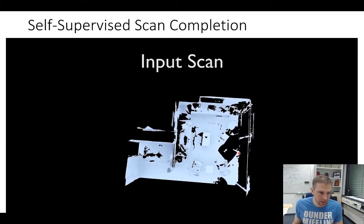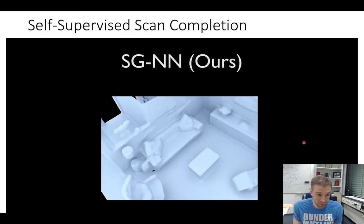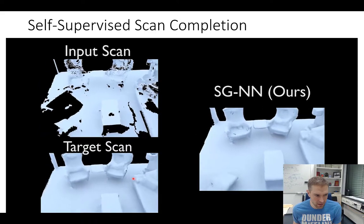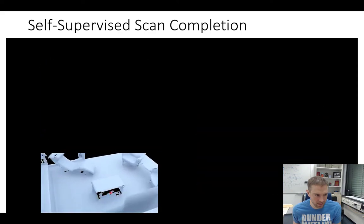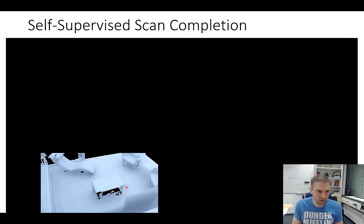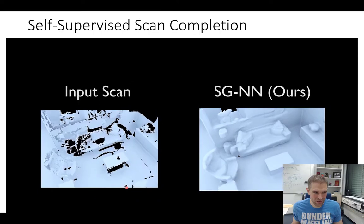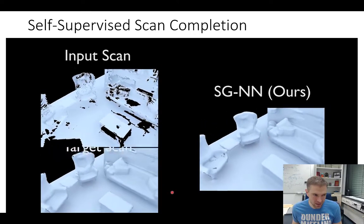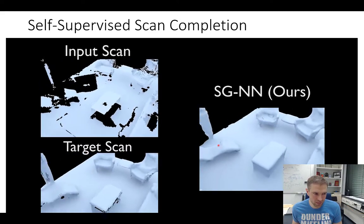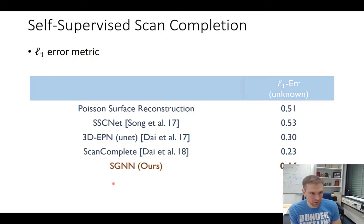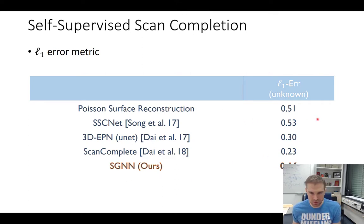We can take an existing 3D scan, apply the self-supervised trick, and get high-resolution geometry. The results look quite good: comparing input scan to our completion, we can fill in missing regions effectively. The target scan itself is never perfect — it's pretty incomplete — but our completion manages to fill in the missing regions. We can train on a lot of data since we don't need any annotations, and we get pretty good results.